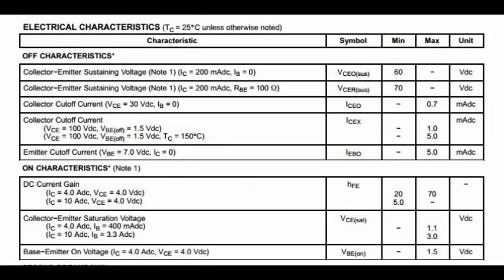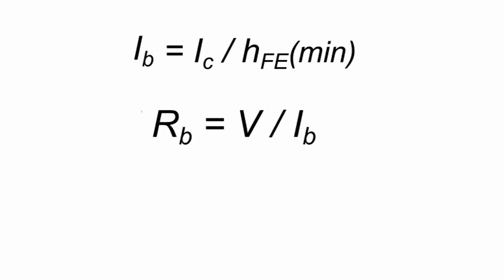The value of minimum gain of the transistor can be found in the transistor datasheet. The value of the base resistor will be equal to the load voltage divided by the base current. The load voltage is equal to the battery or power supply voltage minus 0.7 volts that are lost in the transistor.